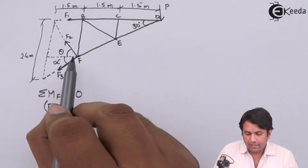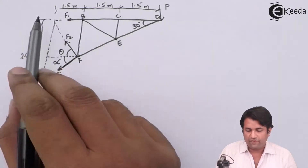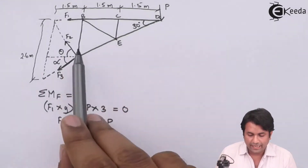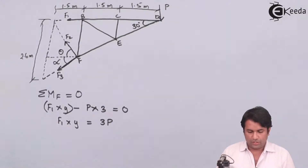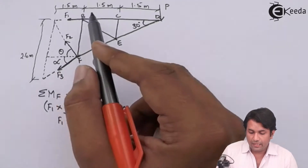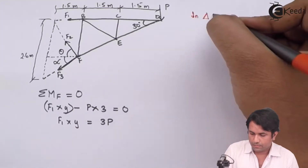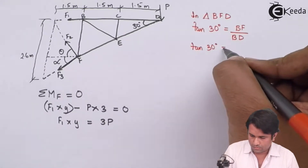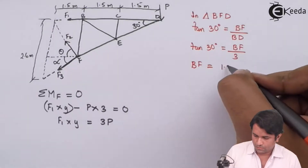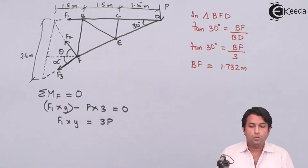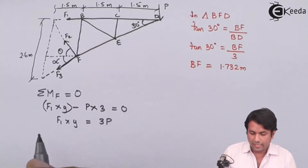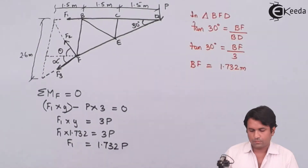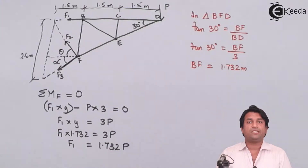With respect to point F, I am taking the moment of force F1 and force P. I know the distance for P, which is 3 meters, but I don't know the height BF. So I will need to do some calculations. To find out height BF in triangle BFD, I get the height BF as 1.732 meters. Now I can put that value into the equation and I get the value for F1 in terms of P as 1.732 times P.